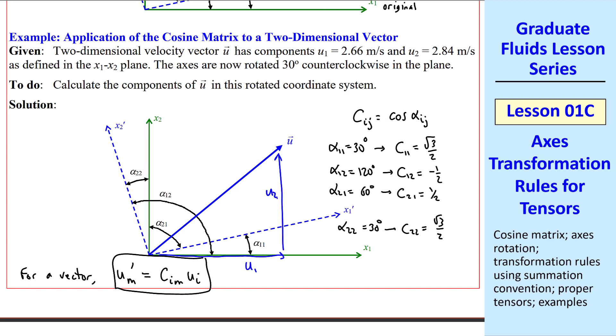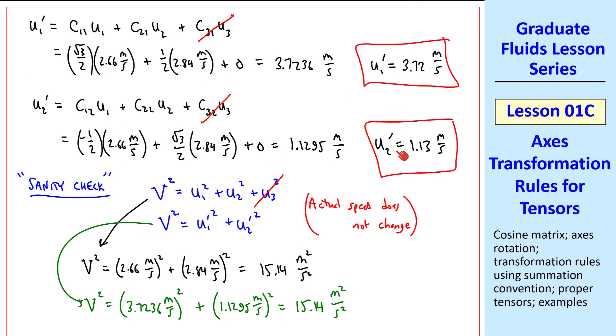As an additional sanity check, here's the original u1 and the original u2. In the transformed coordinates, this is u'1 and this is u'2. We can see that u'1 has to be greater than the original u1, and u'2 is less than the original u2. This also agrees with our answers.